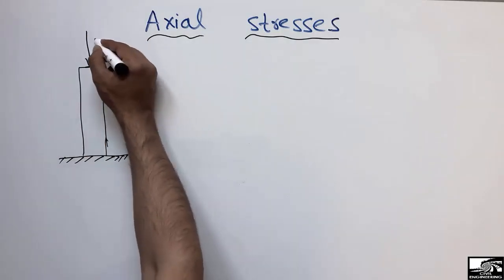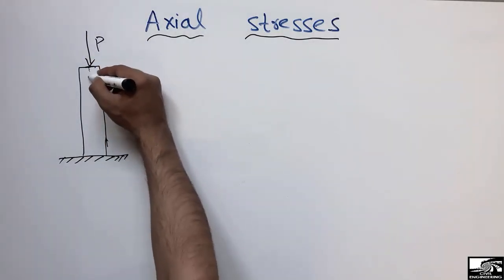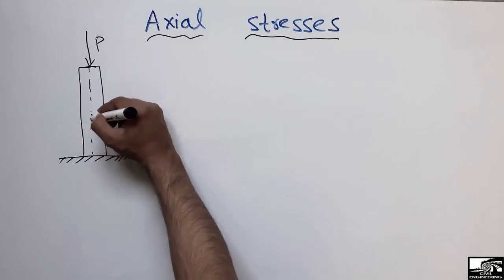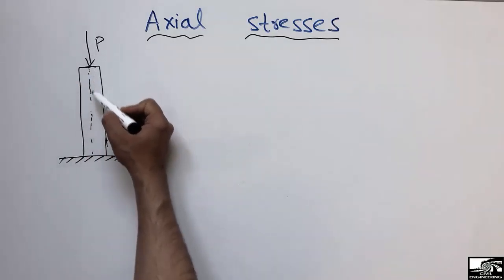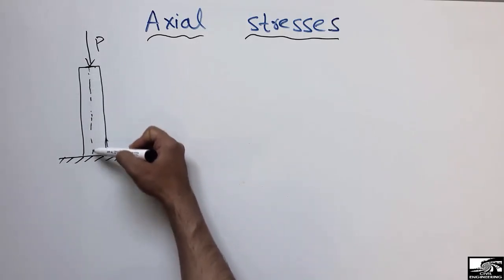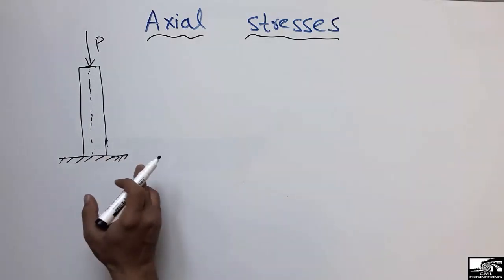the load acts on this column, it's P, and this is the axis of the beam. Due to this load, it will create stresses along the axial direction of the column. The stresses created due to this load are called axial stresses because the load P is acting along the axis of the member.